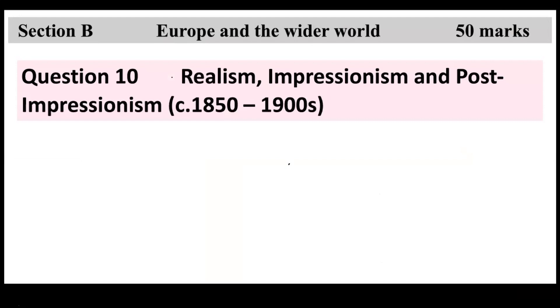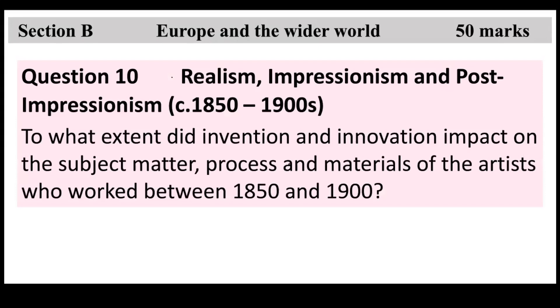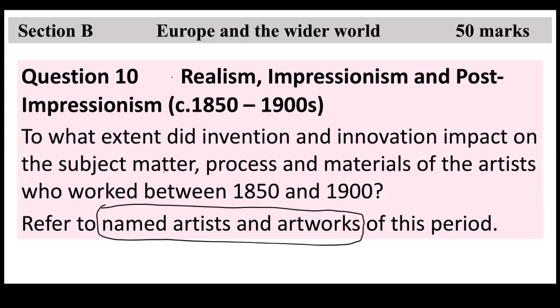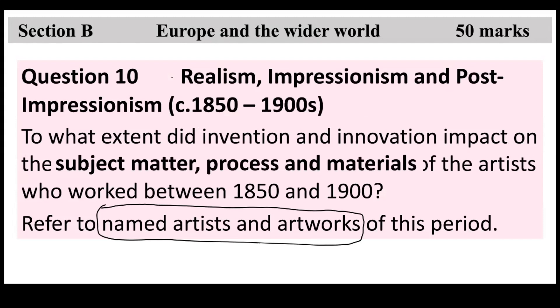We're going to focus on Section B: Europe and the Wider World. This question takes 50 marks. Question 10 — Realism, Impressionism and Post-Impressionism — asks: to what extent did invention and innovation impact on the subject matter, process and materials of the artists who worked between 1850 and 1900? Refer to named artists and artworks of this period. So you're looking at invention and innovation, named artists and artworks, and checking the impact on subject matter, process and materials.